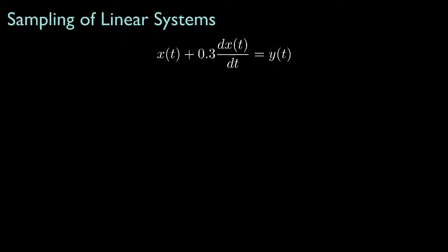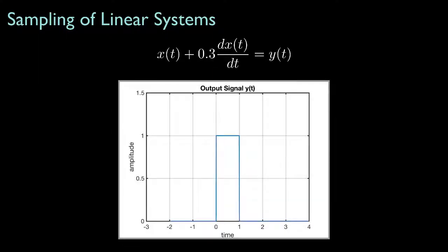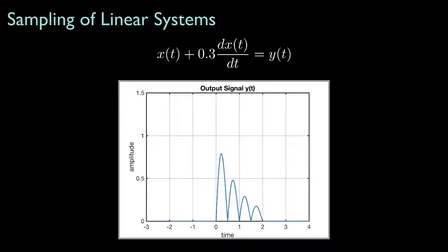As an example, let's suppose we have a system described by a first-order differential equation with a coefficient equal to 0.3, and we'd like to determine the input signal x of t that will produce a rectangle function output over the interval from 0 to 1. Of course, this result could be easily computed analytically, as we've done in circuit classes. But the power of this method is for more complicated signals — for instance, one with decaying oscillations — where we can still solve for the input signal estimate by first sampling the output signal.